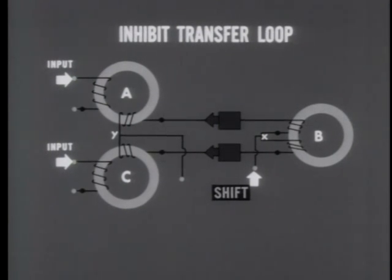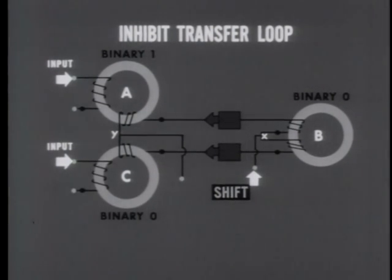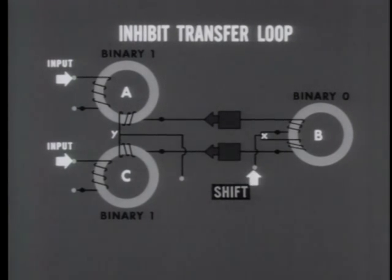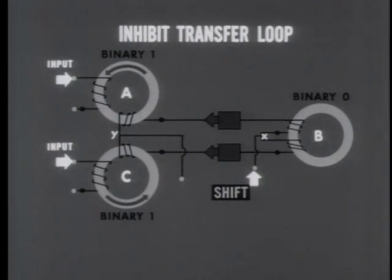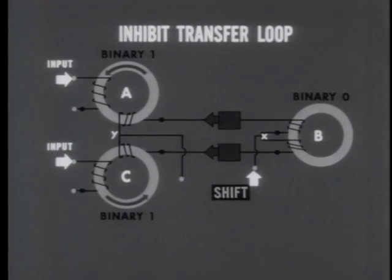All three cores are cleared to zero. A non-dot input is applied to core A, switching it to binary one. And for our first operation of the loop, core C is also switched to one. Now the shift pulse is applied. The question is whether the branch currents into which it divides at point X will be equal or unequal. The answer depends on the impedances they encounter. Look at cores A and C — both are at one; in both, the magnetic flux is positive. Both output windings receive branch current on the same side — the dot side — and the windings themselves are identical. Consequently, the impedances are equal.